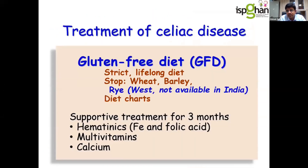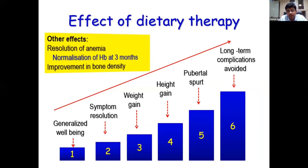The treatment of celiac disease is a strict, lifelong gluten-free diet, and we have to be dogmatic while advising patients. You stop wheat and barley — rye is not available in India. Diet charts are widely available, and you support patients with hematinics, multivitamins, and calcium for the first few months. After dietary therapy is implemented, children show well-being, symptom resolution, weight gain, height gain, pubertal spurt, and avoidance of long-term complications including resolution of anemia and improvement of bone density.